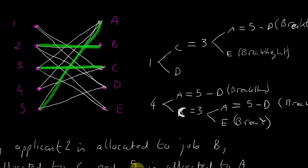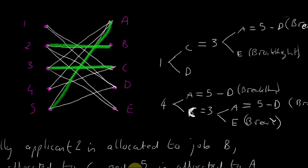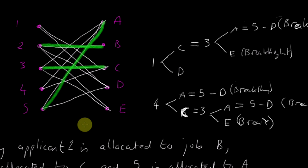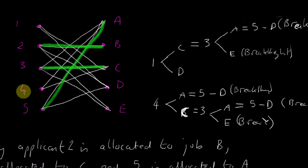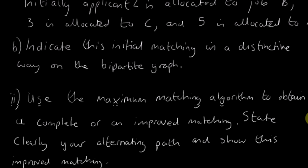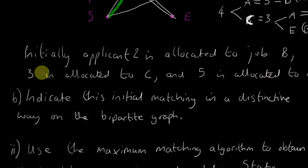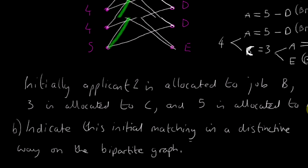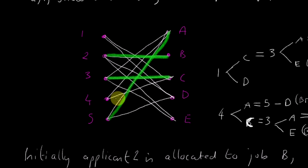There's quite a lot to explain, but hopefully you can see the pattern. We started from 1 and 4 because they were the only two nodes that didn't have green lines going from them. These green lines came from the initial allocation stated in the question: applicant 2 allocated to job B, 3 to C, 5 to A. This whole process is to improve the matching of jobs. Let's continue the rest of this question in the next video.